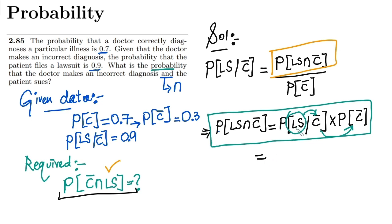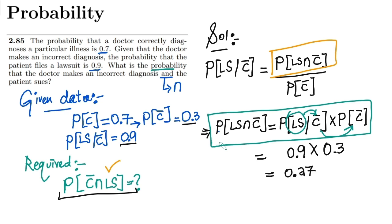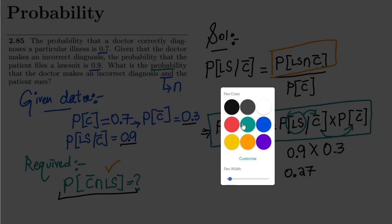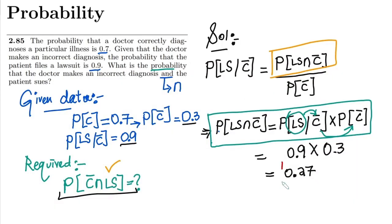Putting in the values: P(lawsuit | C complement) is 0.9, and P(C complement) is 0.3. Multiplying them gives 0.27. So the probability that the doctor makes an incorrect diagnosis and the patient sues is 0.27. That's the required answer. We've demonstrated the chain rule for two related events — see you soon!